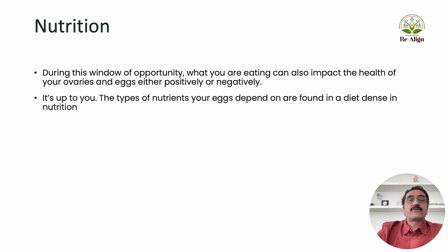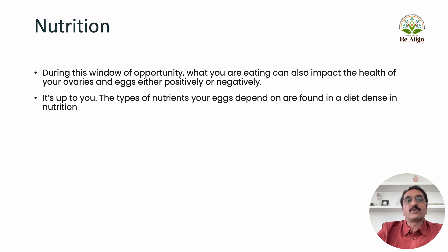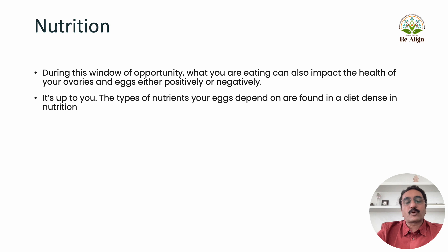Nutrition is the key for a proper healthy menstrual cycle and a fertile cycle, because through nutrition we are providing everything possible for our body and our eggs to grow in a healthy way. It is important that you understand what to avoid — specifically we recommend avoiding refined sugar and refined bakery products, and avoiding artificially flavored or packaged food, because the preservatives, pesticides, and certain chemicals in these act as hormone disruptors.